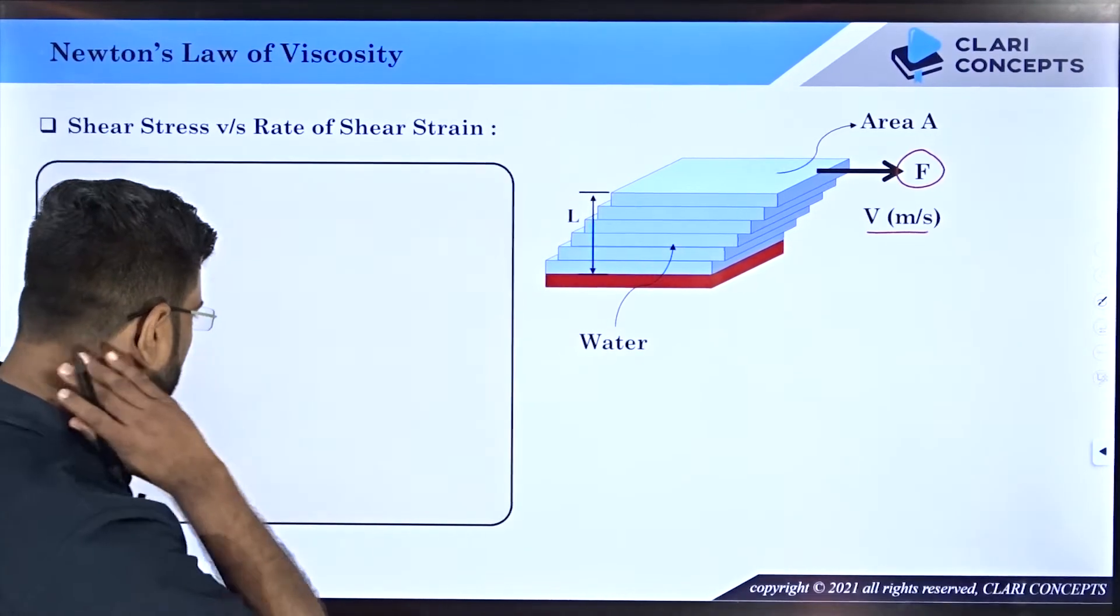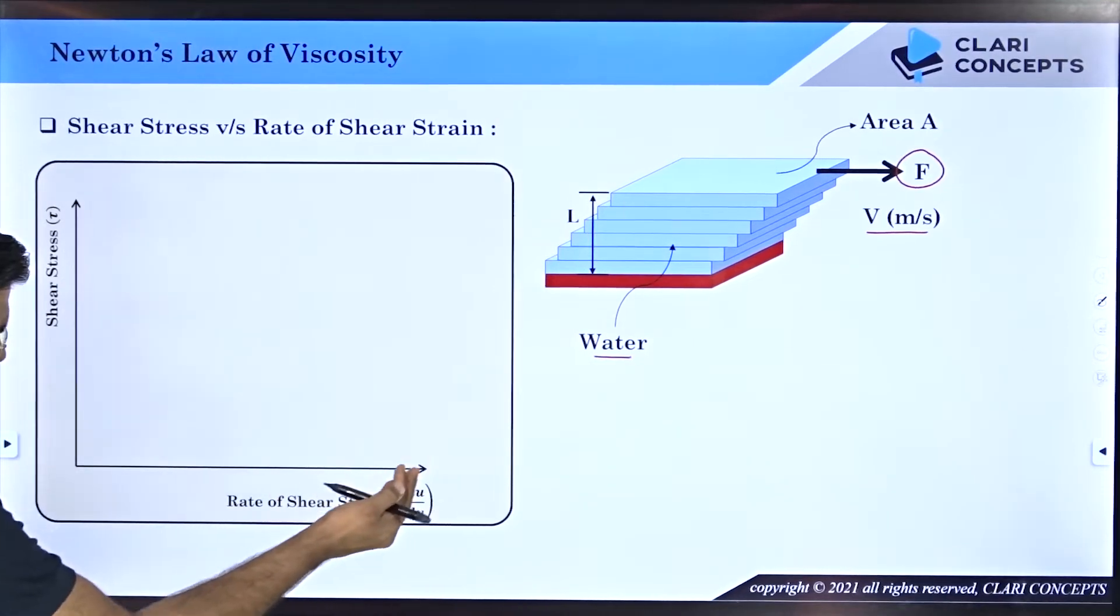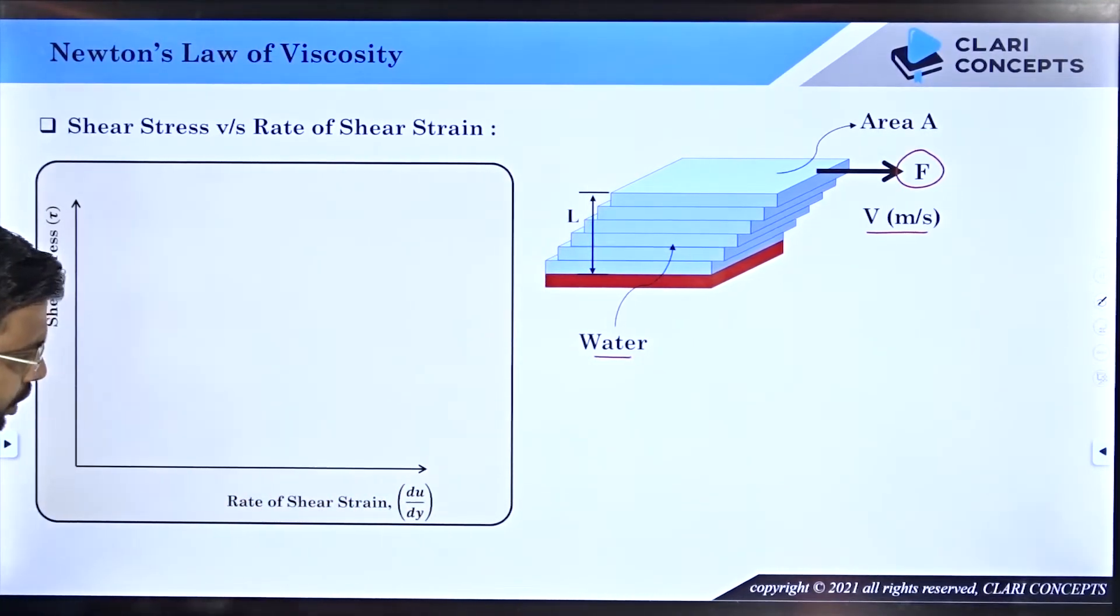Now we will try to see it particularly for water. Let's say I have the x-axis where I represent the rate of shear strain, and on the y-axis I have the shear stress tau.